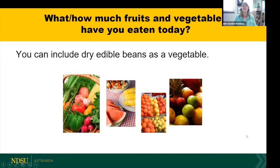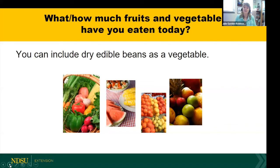I want you to ponder briefly — how many fruits and vegetables have you had today? Did you have an orange for breakfast, some juice, or maybe a smoothie with vegetables? What did you have for lunch? In this presentation we are including dry edible beans — like black beans and kidney beans — as a vegetable. They can be either a protein or a vegetable. Take about 30 seconds to think about how you're doing so far.